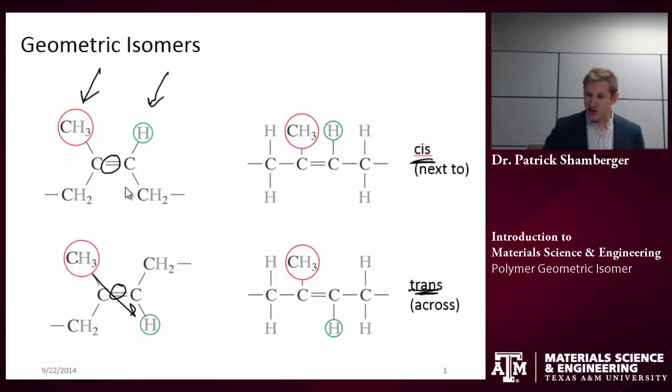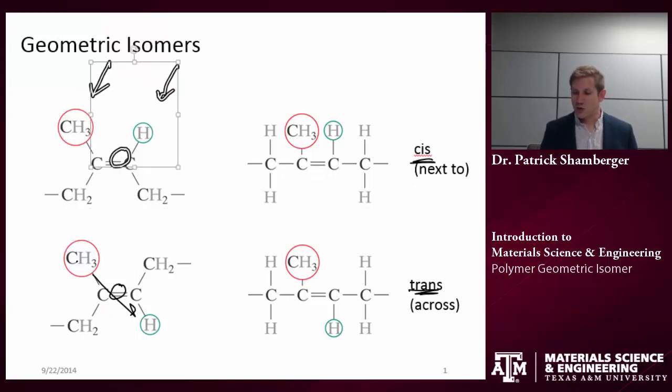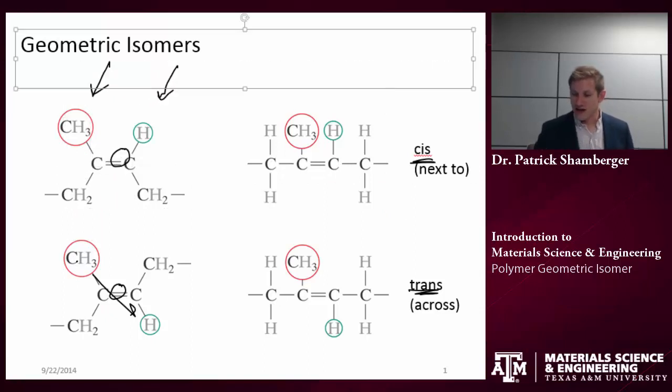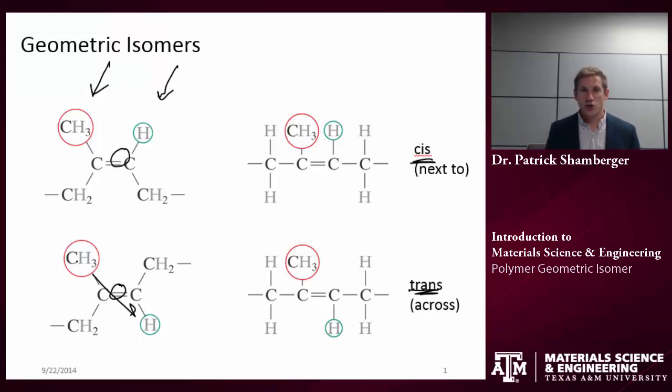So, just really quickly in review, geometric isomers. It's talking about the structure within a repeat unit. It requires a double bond. And the two terms to remember are cis and trans. That refers to next to and across.